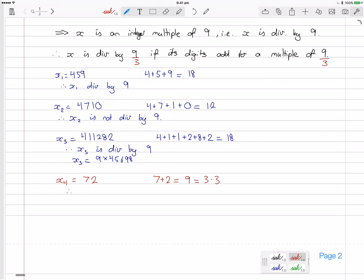And so therefore, I can say x4 is divisible by 3. And of course, 72 is 3 times 24. So we can clearly see that it's divisible by 3.